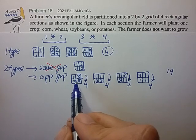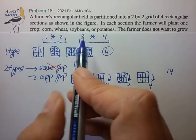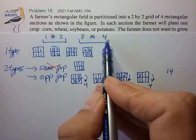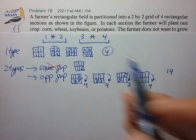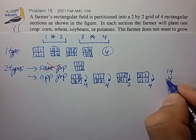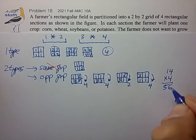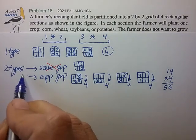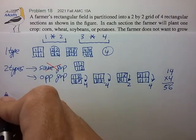But of course that's with the selection of 1 and 3. I could have selected 2 and 4, or 2 and 3, or 1 and 4, so I have to multiply that by 4 for all those combinations. So that's 56 for two types of crops. All right, we're making progress.